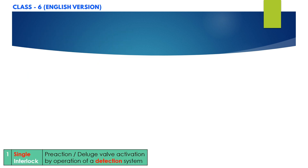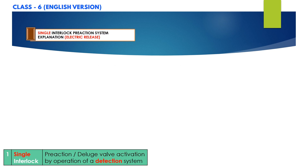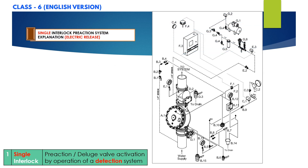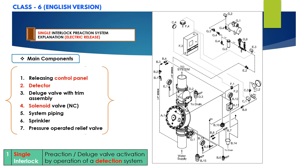Let's look at the single interlock pre-action system with electric release. The schematic shown on your screen is an electrically controlled single interlock pre-action system. The main components for this type are: releasing control panel, detector, deluge valve with complete trim assembly, solenoid valve which is normally closed, system piping connected to the sprinklers, and pressure operated relief valve.